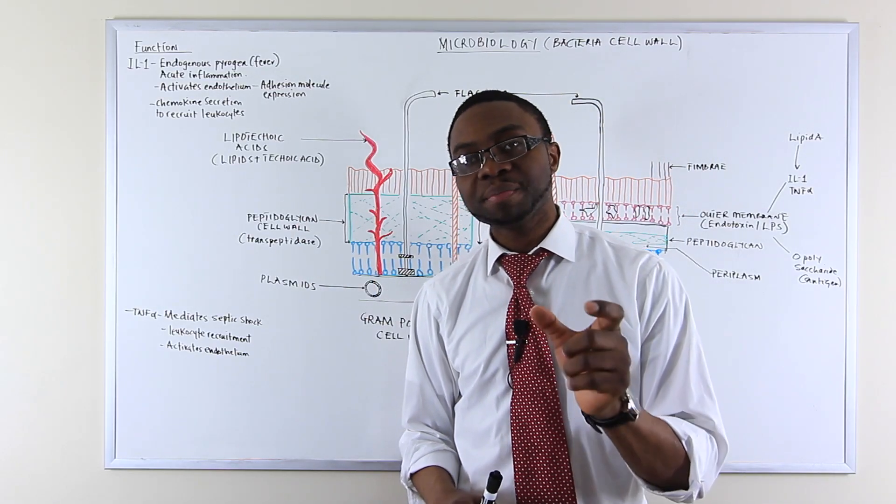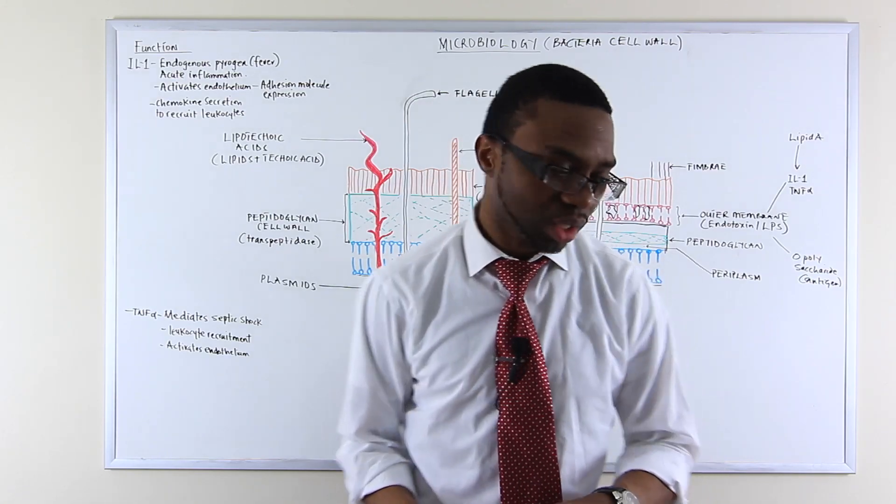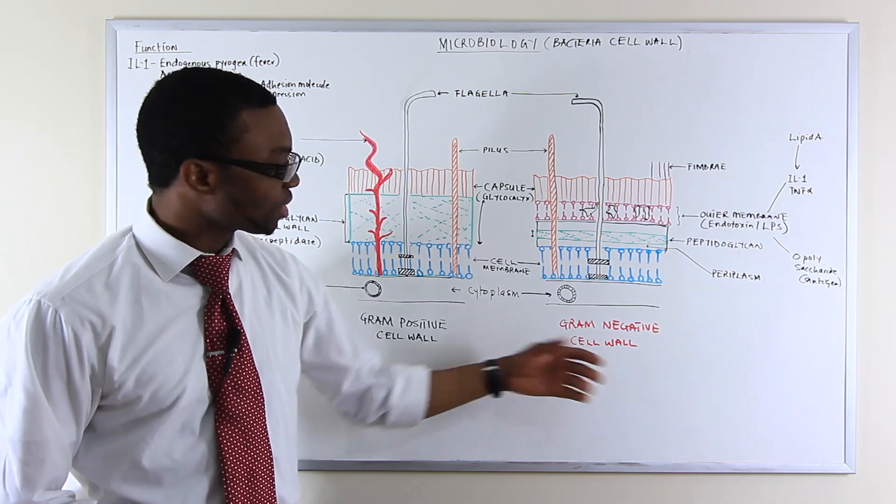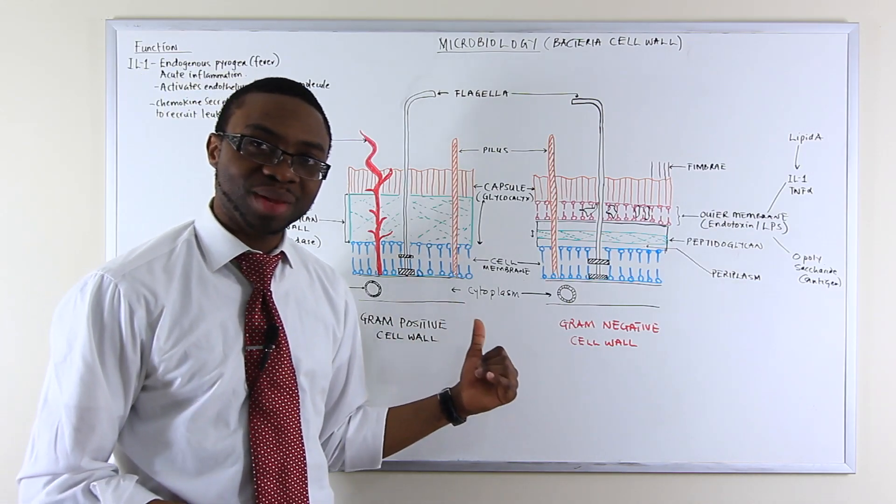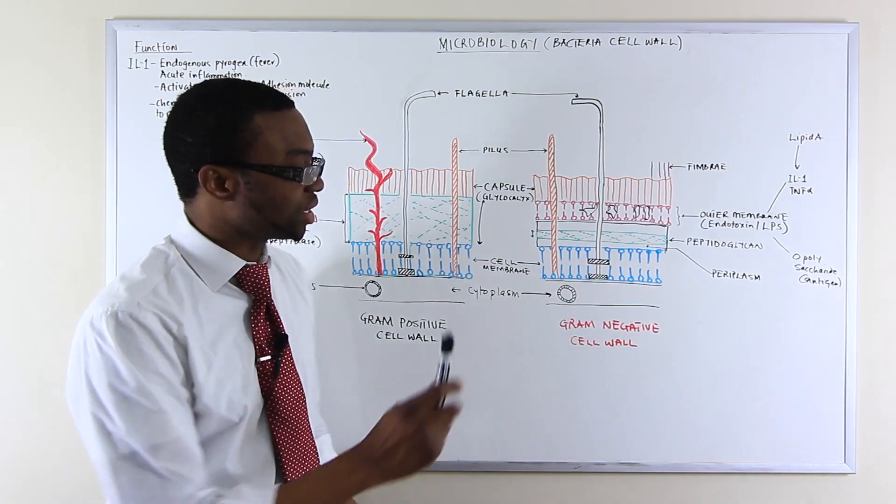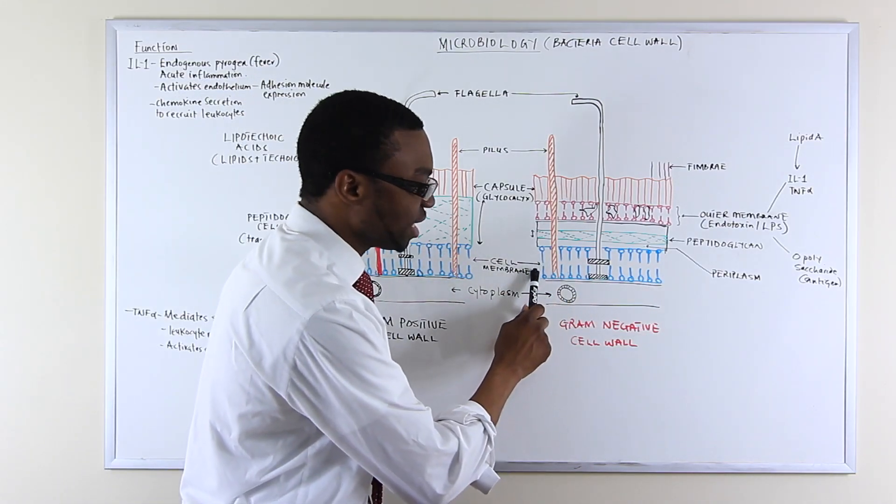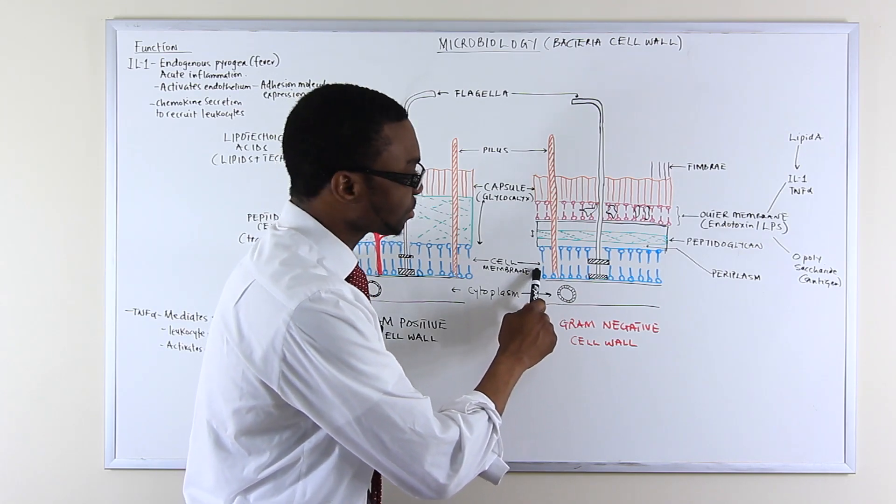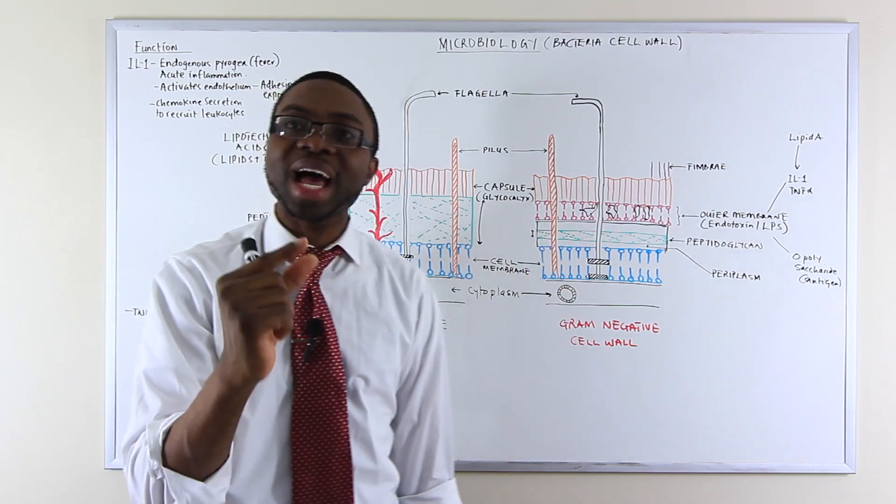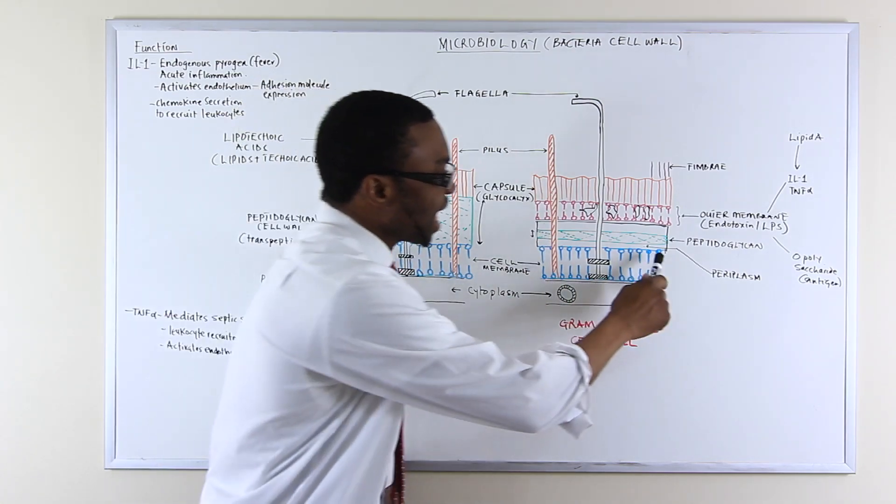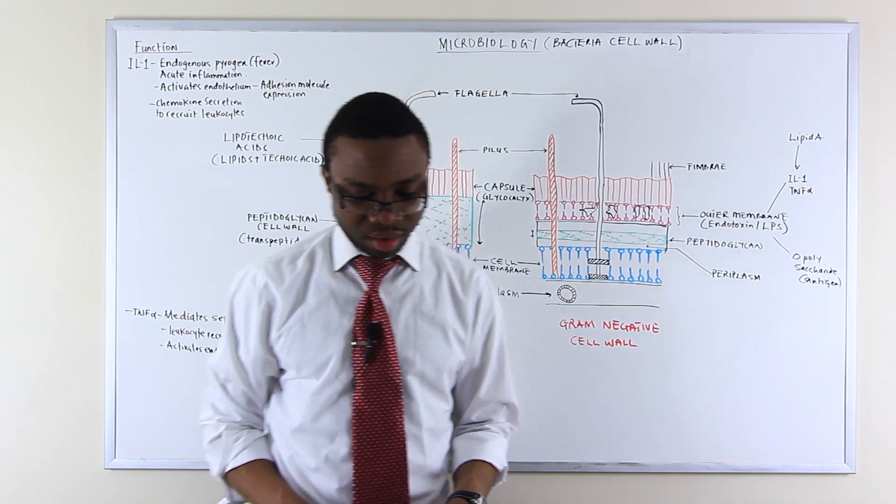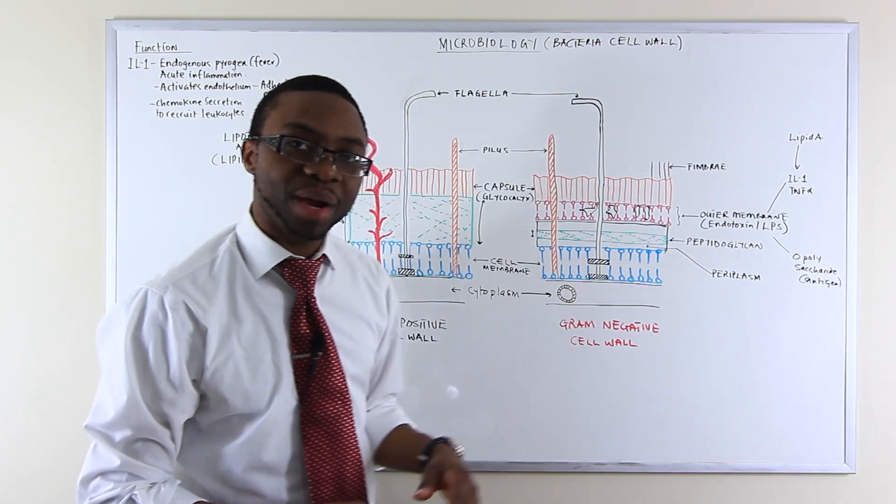There is the periplasm. What is the periplasm? Let's go to which bacteria has a periplasm, the gram-negative. The gram-positive also has a periplasm space, but the periplasm space is more obvious in a gram-negative bacteria because they have this inner cell membrane, which is a phospholipid bilayer, and there's a space between that and the peptidoglycan cell layer. So that space is known as the periplasm space.